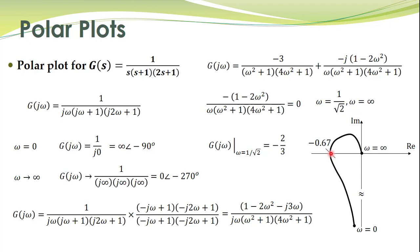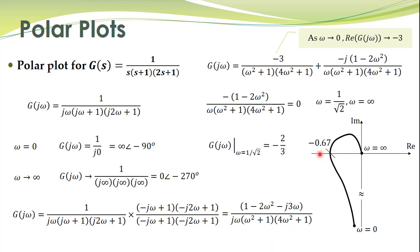How we use polar plots for the analysis of control systems will be learned later — here we are just learning how to sketch them. One more observation: as omega tends to zero, the real part equals minus 3. So for a more precise sketch, the curve starts from around minus 3 on the real axis at very low frequency.